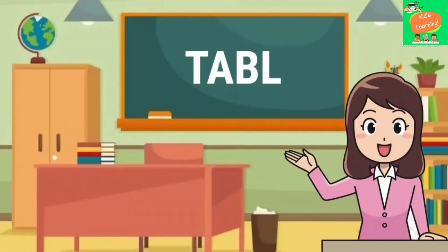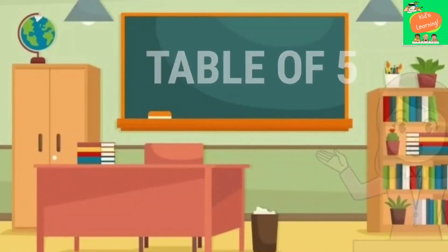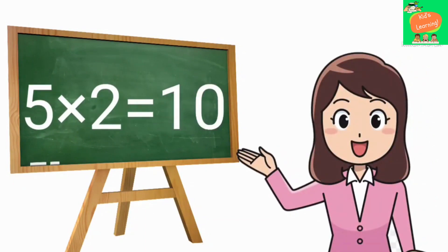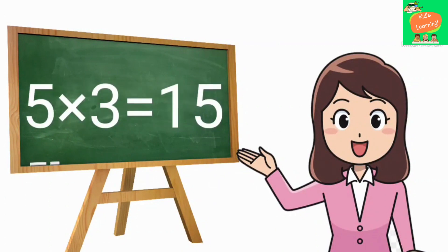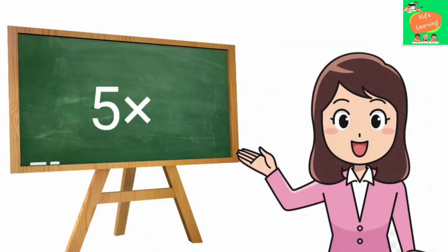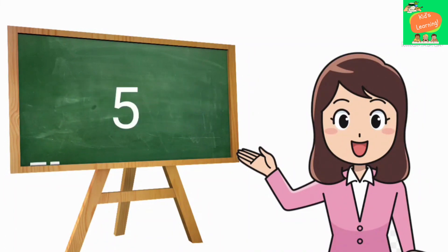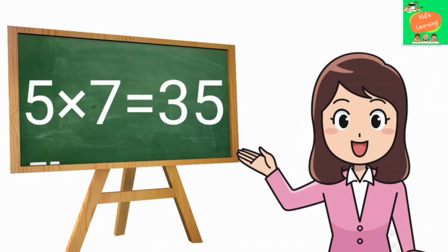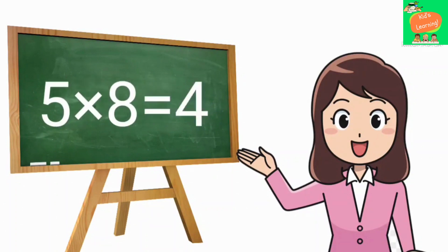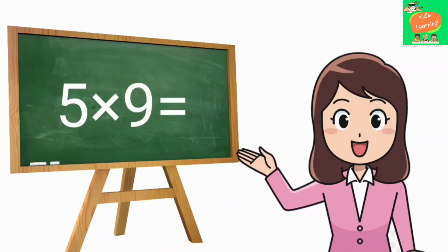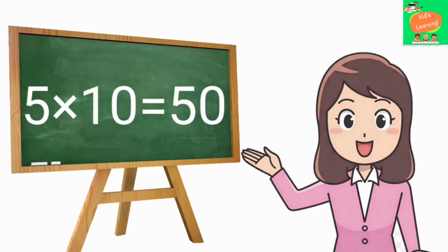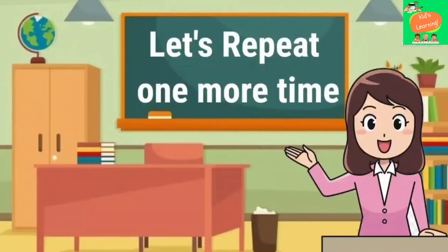Hello kids, today we will learn the table of five. Five ones are five, five twos are ten, five threes are fifteen, five fours are twenty, five fives are twenty-five, five sixes are thirty, five sevens are thirty-five, five eights are forty, five nines are forty-five, five tens are fifty. Let's repeat one more time.